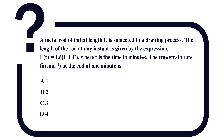So, in this question we need to find the true strain rate. The instantaneous length is given as L = L0 into (1 + t²). Now let's find the change in length — we differentiate L with respect to t. On differentiating with respect to t, dL/dt gives us L0 into (the differentiation of 1 is zero, and the differentiation of t² is 2t) into dt. So dL = L0 · 2t · dt. This is our equation one.